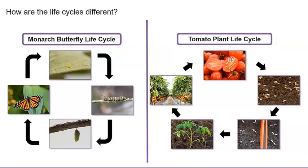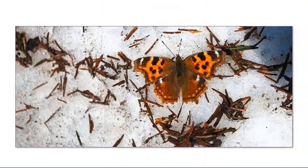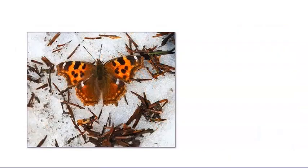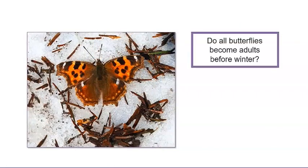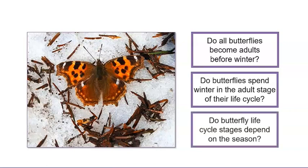Your task for today will be to respond to the question about life cycles. We've learned a lot about the life cycles of organisms including butterflies. How can you use your knowledge about life cycles to describe this photograph from the beginning of our lesson? We now know that this butterfly is in the adult stage of its life cycle. We've learned that monarch butterflies migrate to avoid the cold. Do all butterflies become adults before winter? Do butterflies spend winter in the adult stage of their life cycle? Do butterfly life cycle stages depend on the season?